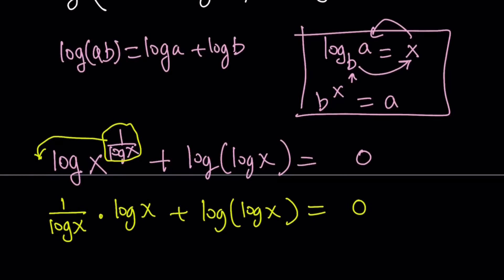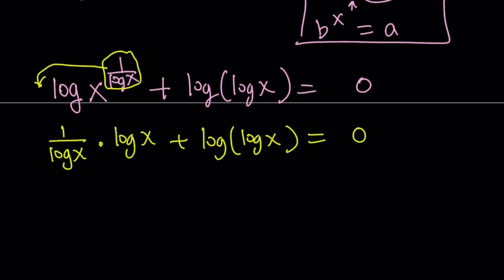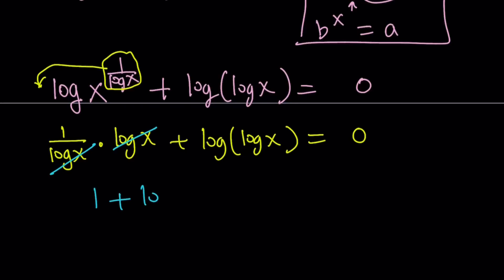We've done this before with the first part — hopefully you'll remember if you've seen the other videos on x to the power 1 over log x or 1 over ln x. Here, log x cancels out. Those two cancel out, leaving us with 1 plus log of log x equals 0.